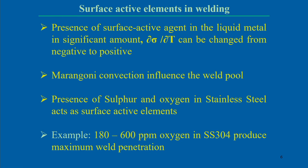Therefore, presence of surface active agents in liquid metal in significant amounts changes the surface tension force. This change — the gradient or temperature coefficient of surface tension — can go from negative to positive. Negative is the normal condition, indicating no surface active elements. Once changed to positive, we assume the presence of surface active elements. The Marangoni convection influences the weld pool shape and size because of this surface tension force.